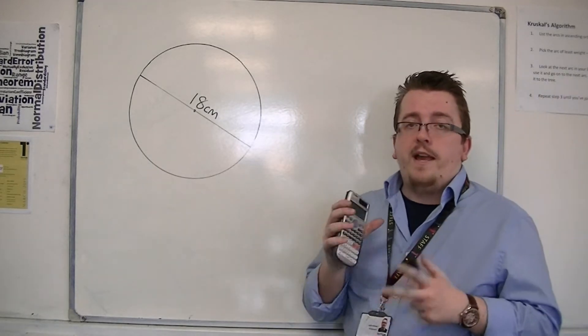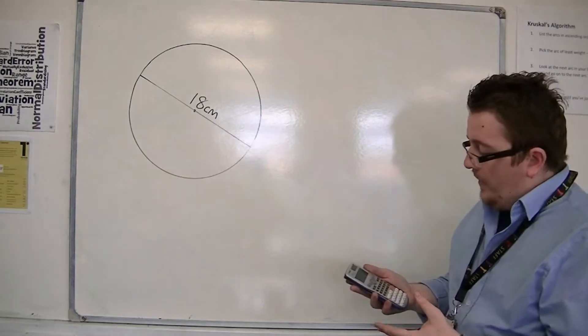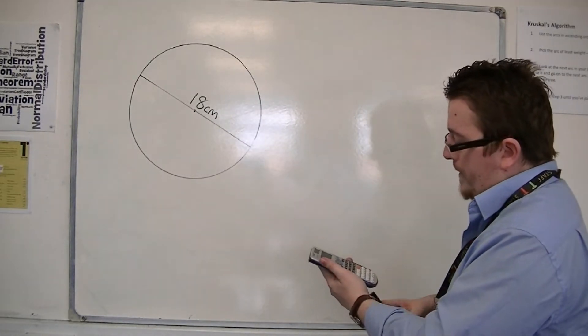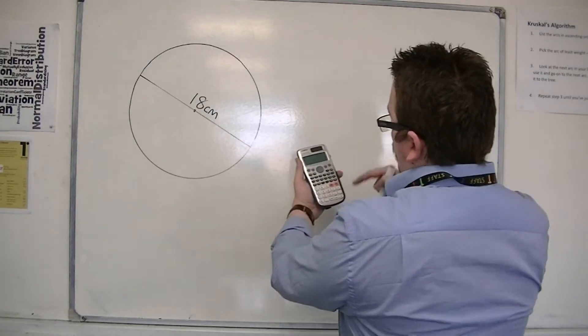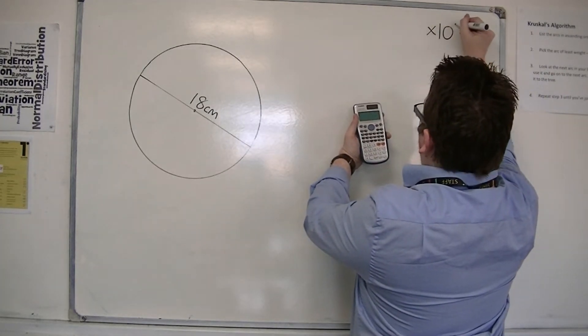You can find it on your calculator, it's already programmed in. For a Casio, and it may be different on other calculators, you'll find it in yellow, right down the bottom, above a button that says times 10 to the x.